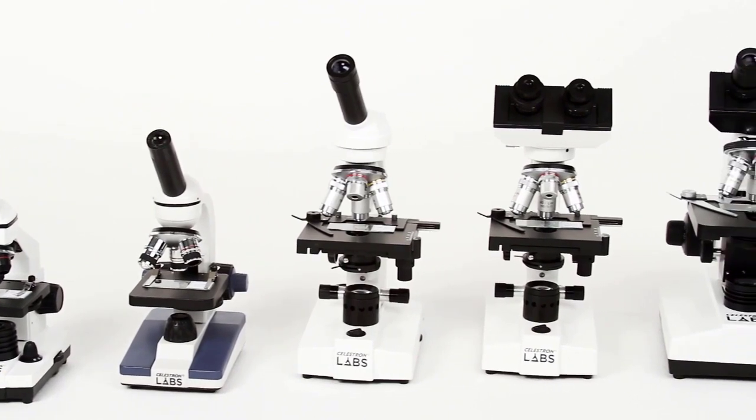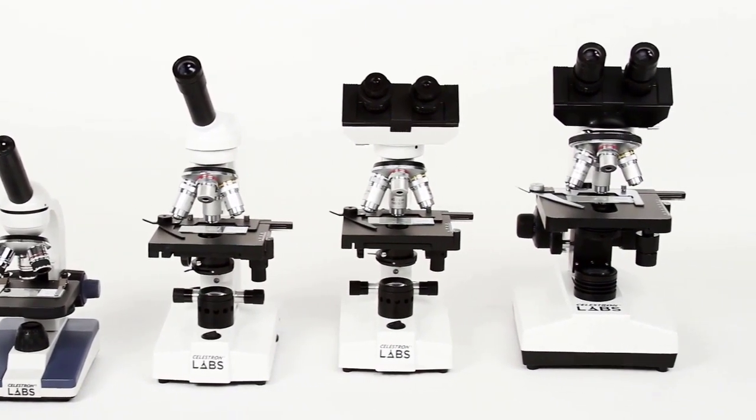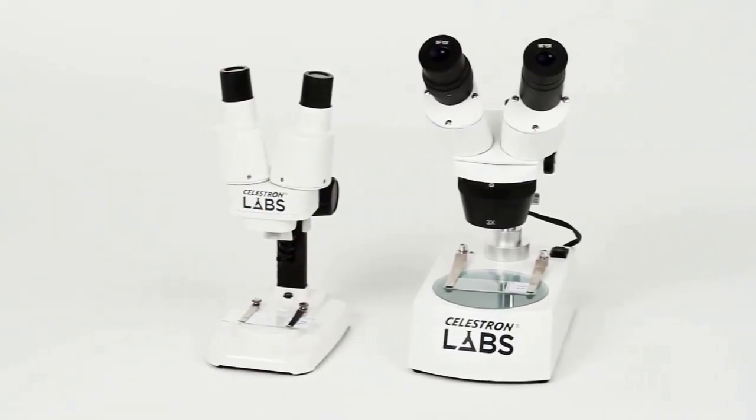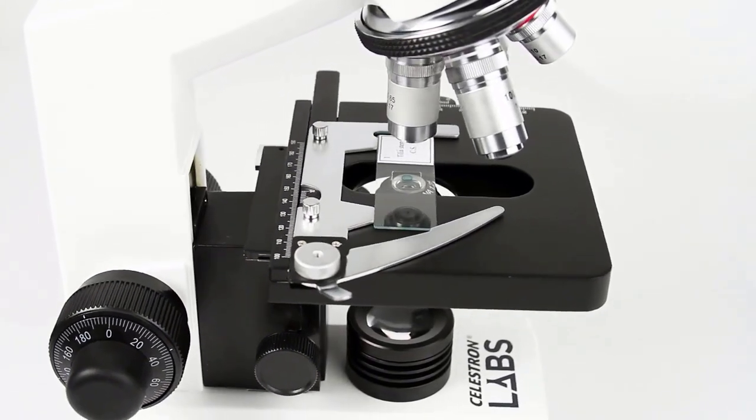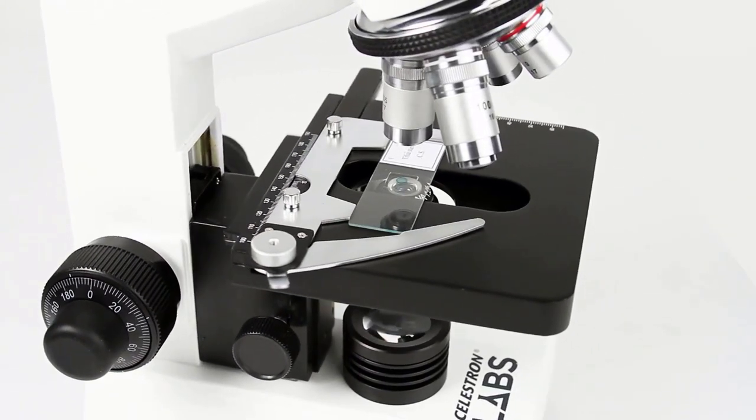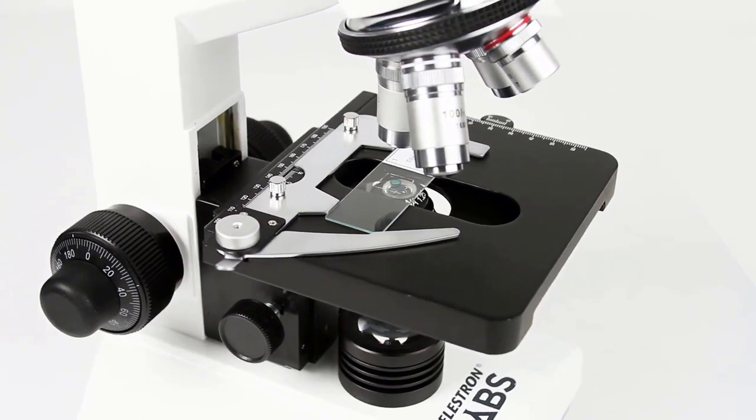Number 2. Celestron CM800 Compound Microscope. The Celestron CM800 Compound Microscope is an affordable option that nevertheless claims to be lab-grade, making it a great choice for college and university students. It comes with 10 prepared slides included out of the box, plus a sturdy all-metal build.